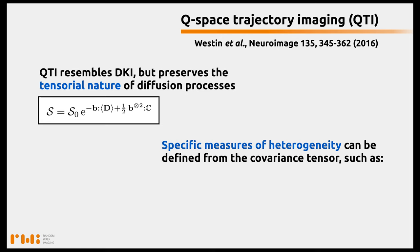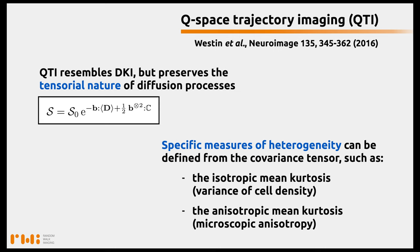The specific measures of heterogeneity include the isotropic mean kurtosis, which is linked to the variance of cell density, and the anisotropic mean kurtosis, which is linked to the microscopic anisotropy. Microscopic anisotropy is defined as the anisotropy of the underlying cells without the confounding effects of their alignment over the voxel scale, unlike fractional anisotropy.